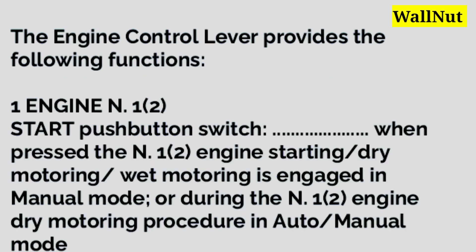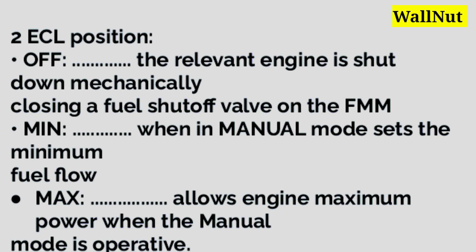The engine control levers provide the following functions for engine N1 or N2. Start push button switch: when pressed, the N1 engine starting dry motoring or wet motoring is engaged in manual mode, or during the N1 engine dry motoring procedure in auto or manual mode. ECL positions — the first is off: the relevant engine is shut down mechanically by closing a fuel shutter valve on the FMU.